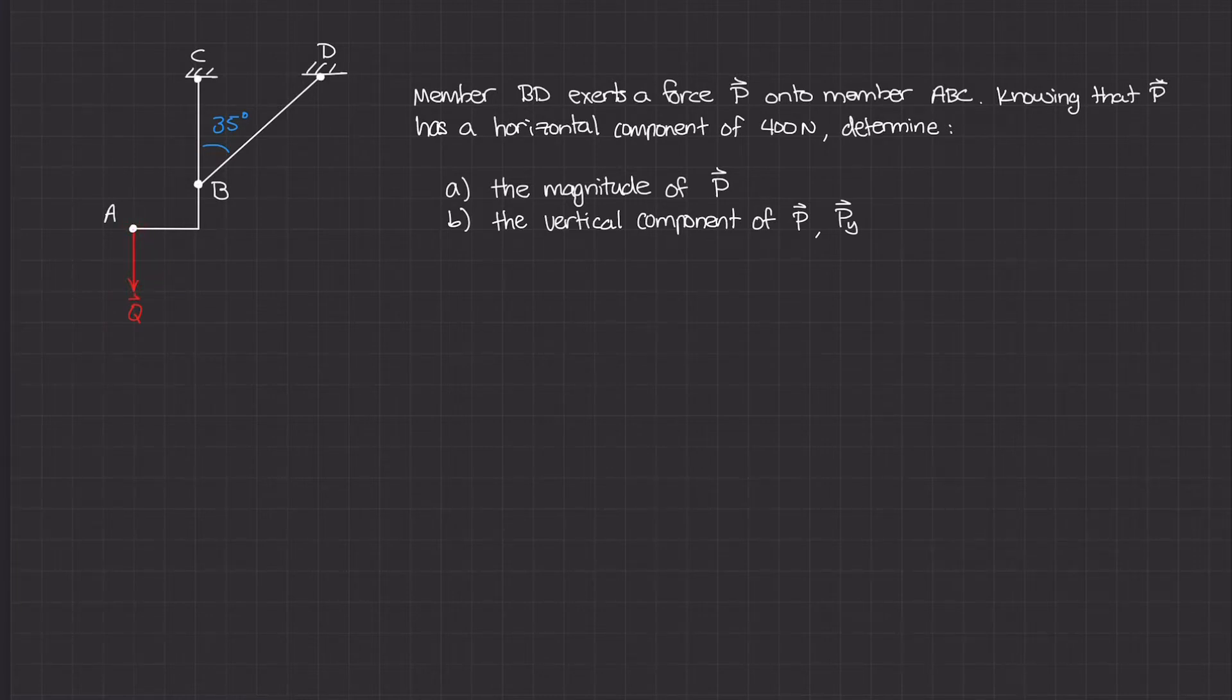It is being supported by member BD. If BD was not existent, force Q would cause member ABC to rotate to the right. But because this member is here, ABC stays where it's at.